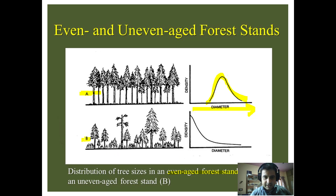In the case of an uneven-aged stand, you can see that smaller diameter trees are higher in number — the density is very high — and as the diameter increases, there is a constant decline in density or number of stems. This is how even-aged and uneven-aged forest models work in terms of diameter and density relations.